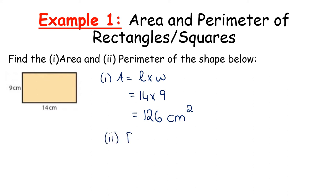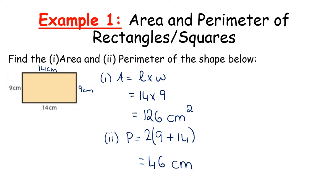For the perimeter, you can add 9 and 14 and then add another 9 and 14. Alternatively, add 9 and 14 together and double the answer, or double each and add. All methods give the same result: 9 plus 14 is 23, doubled gives 46 centimetres. Area is a two-dimensional measure — centimetres squared — while perimeter is one-dimensional, just centimetres.